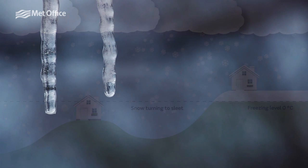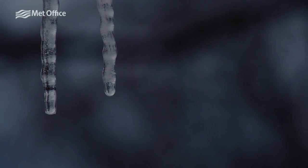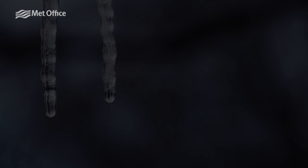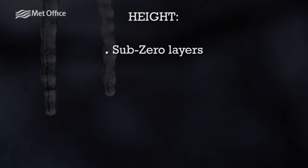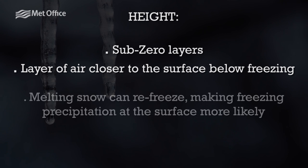But it is not just the freezing level that affects what type of precipitation arrives at the surface. Other effects such as sub-zero layers can have a dramatic effect — for example where there is a layer of air closer to the surface that is below freezing in temperature. As the melting snow falls through a sub-zero layer it can refreeze, making freezing precipitation at the surface more likely.